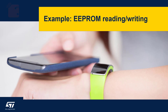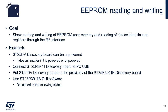Now let's do some examples involving EEPROM reading and writing via RF, so the SD25DV discovery board does not need to be powered. First, connect the SD25R3911B discovery board to your PC USB port. Then put the SD25DV antenna near the SD25R3911B board. You can put them on top of each other or side by side, but make sure they are close enough so that RF communication can occur.